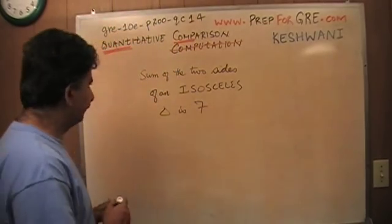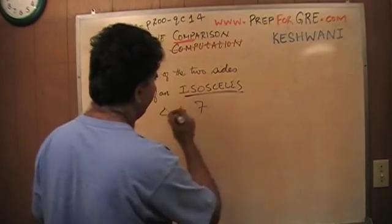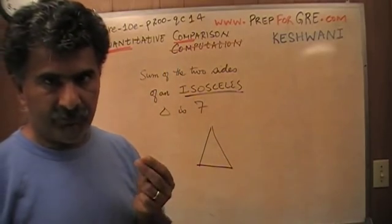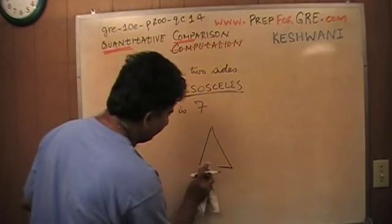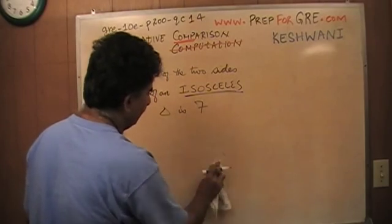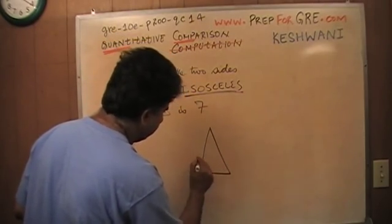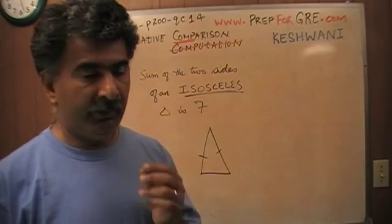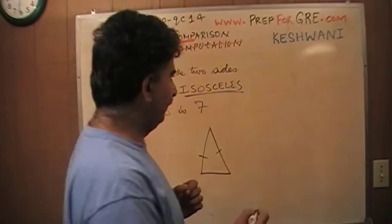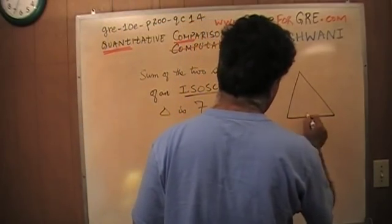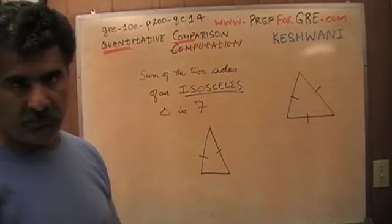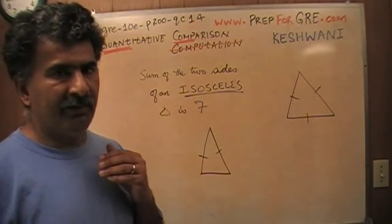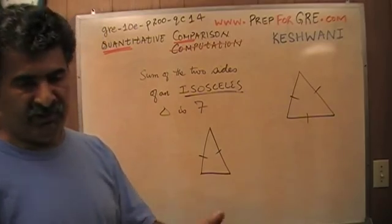An isosceles triangle is a very special kind of triangle. A triangle by definition has 3 sides. An isosceles triangle is one where 2 of the 3 sides are equal to each other — as opposed to an equilateral triangle, where all 3 sides are equal. We are dealing with an isosceles triangle where 2 sides are equal.